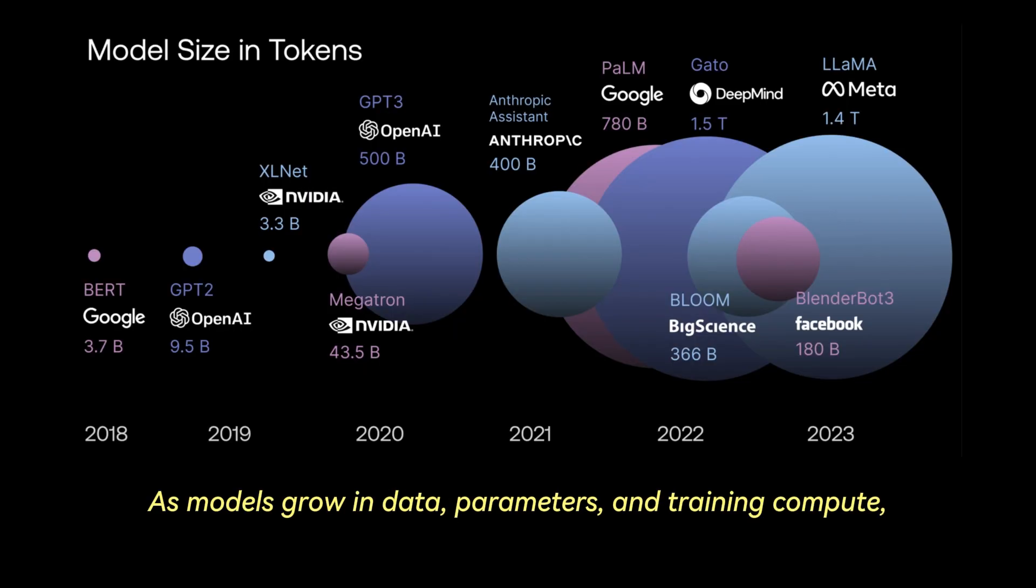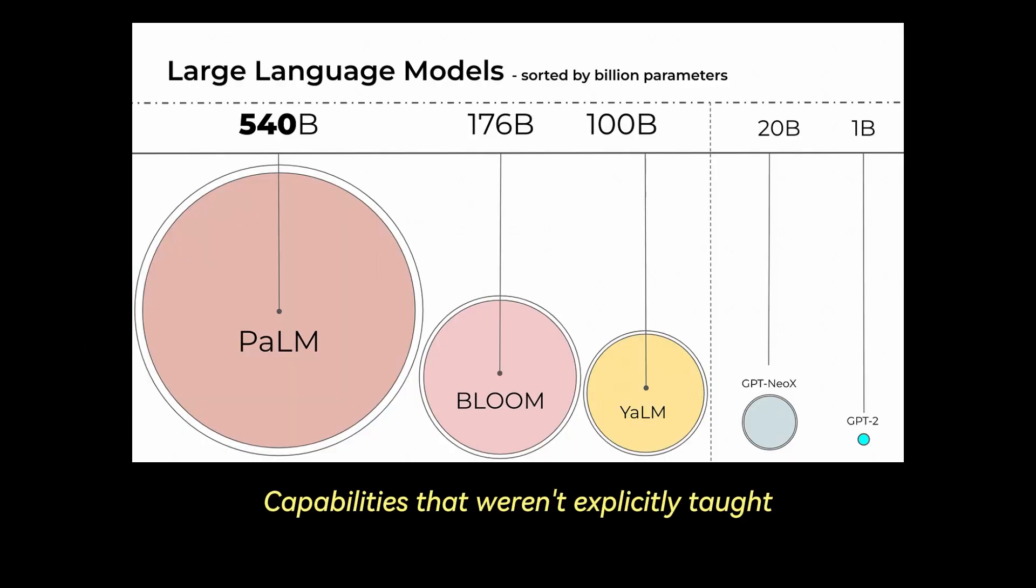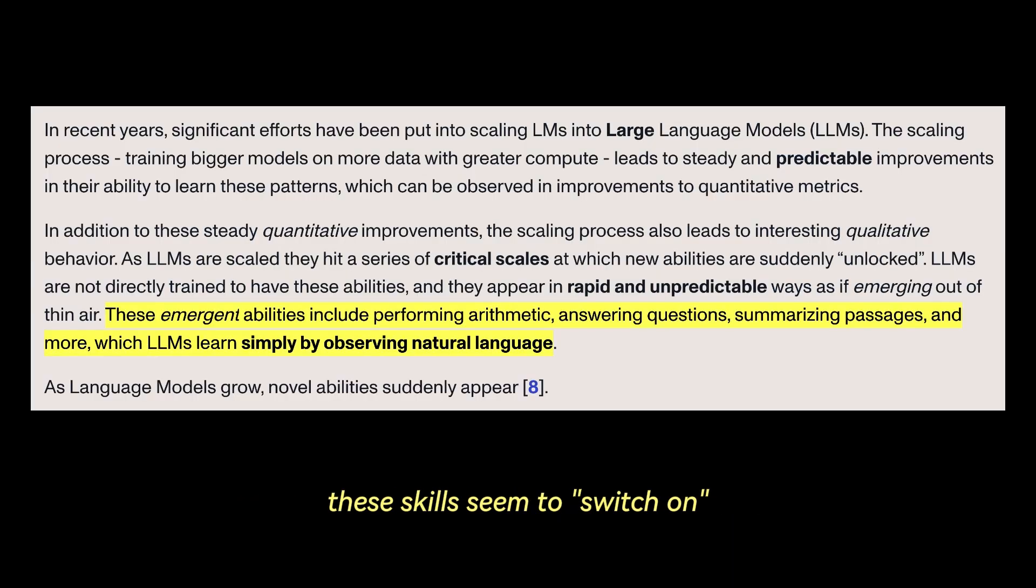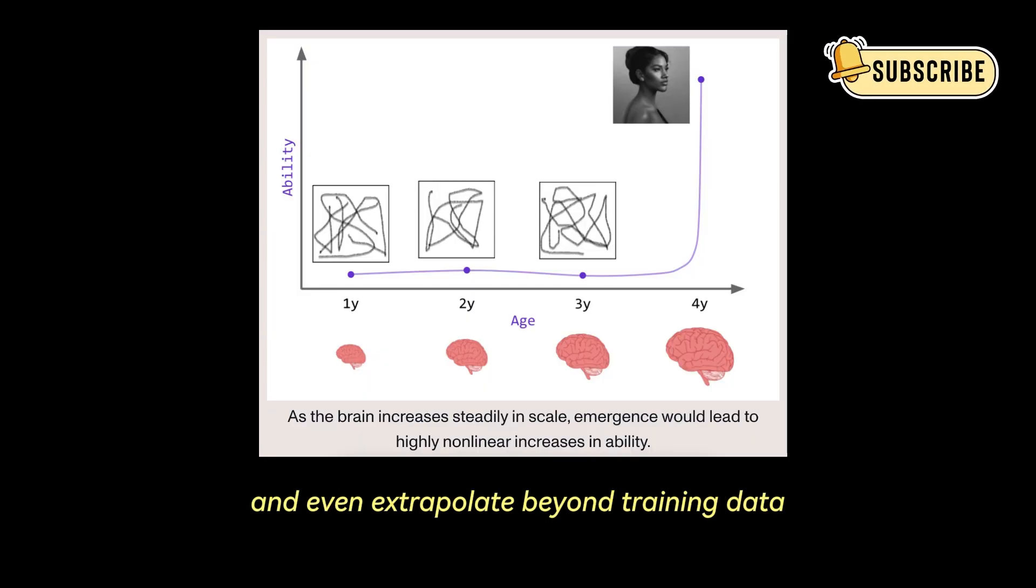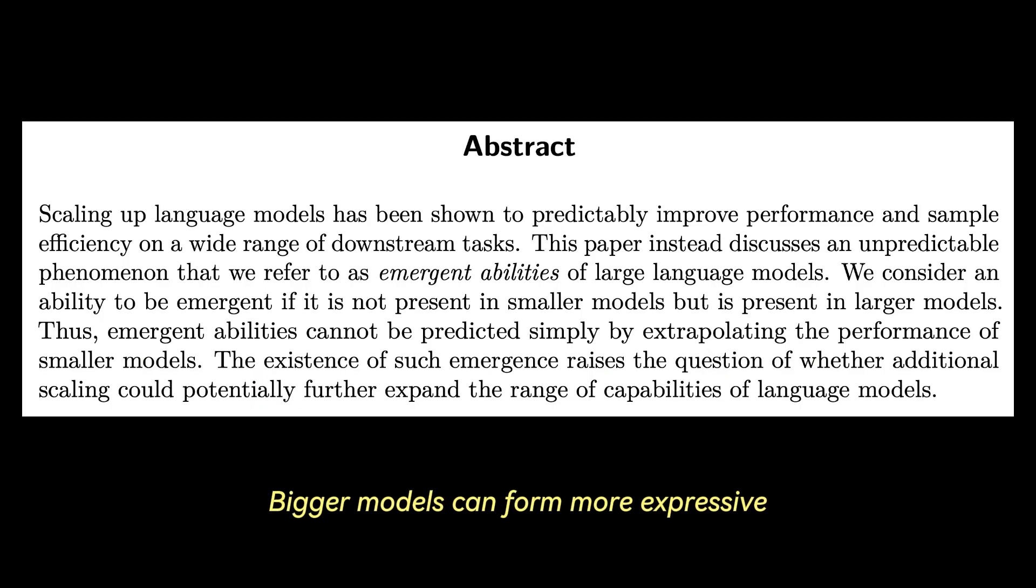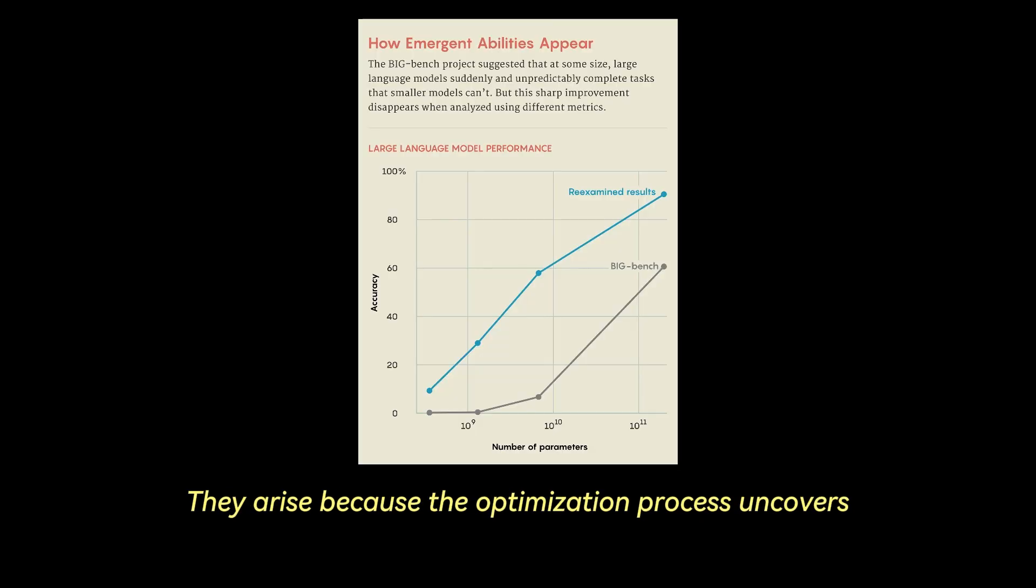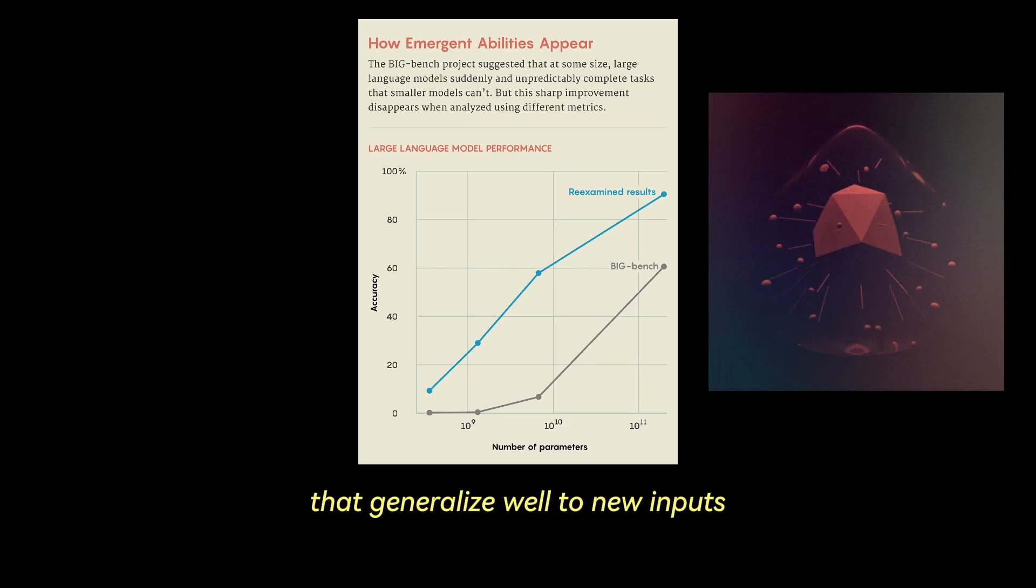Why does scale matter? As models grow in data, parameters, and training compute, they begin to exhibit emergent behaviors—capabilities that weren't explicitly taught or present in smaller versions. For example, smaller models may struggle with multi-step reasoning or code synthesis, but beyond a certain scale, these skills seem to switch on. This phenomenon is not fully understood, but it suggests that generalization improves with scale. The model begins to interpolate, and even extrapolate beyond training data in ways that resemble general intelligence. Bigger models can form more expressive internal representations, capture more abstract patterns, and resist overfitting to surface-level correlations. These behaviors aren't just due to memorization. They arise because the optimization process uncovers compressed representations of high-level concepts that generalize well to new inputs.